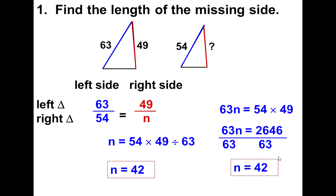I still get n is 42. And the reason why is because in both of these processes, I am multiplying 54 by 49 and I'm also dividing by 63 in both cases. That's the reason why I get the same answer even though I use two different methods.